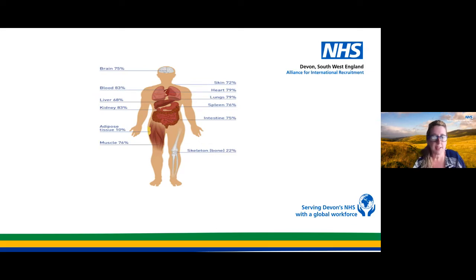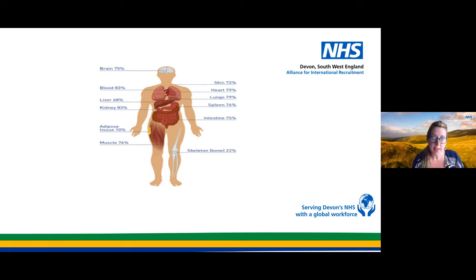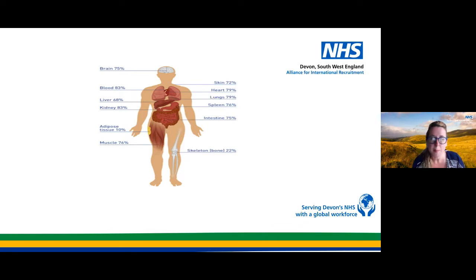This is a quick refresh for all of us nurses as to how much of the body is composed of water. Water is distributed throughout the body and organs, and the water content of various organs depends on their composition. It ranges from 83% in blood to only 10% in adipose tissue, which is our fat tissue. Muscle has a 76% water count and there is 75% water in the brain.